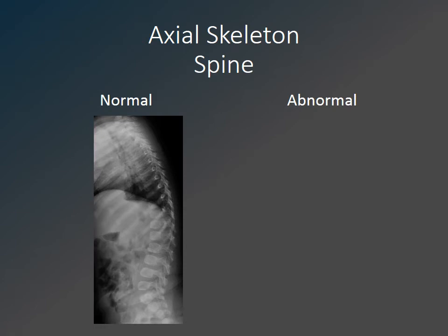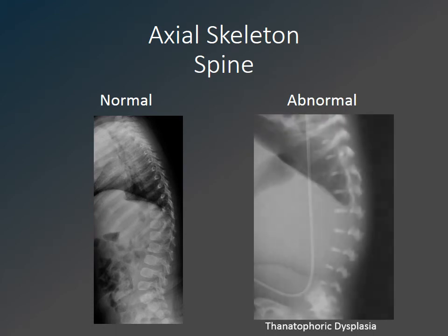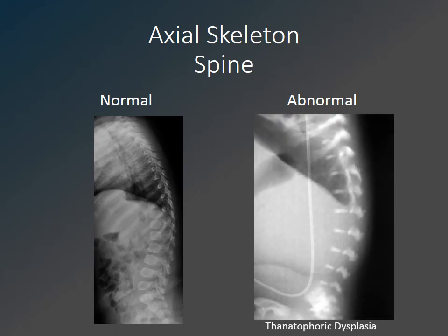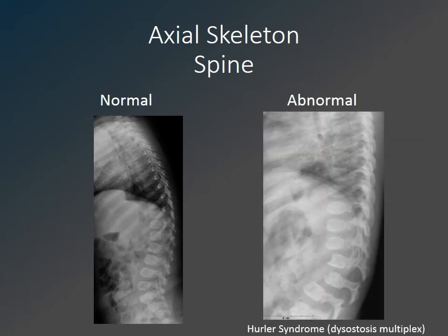Next, we will move on to the spine. On the right is an example of severe platyspondyly — a diffuse flattened appearance of all visualized vertebral bodies — in a child with thanatophoric dysplasia. In a patient with Hurler syndrome, the L1 and L2 vertebral bodies are hypoplastic in the AP dimension with anterior inferior beaking and focal kyphosis. Similar abnormalities are characteristic of other mucopolysaccharidoses, and the radiographic findings of all the storage diseases are collectively termed dysostosis multiplex.